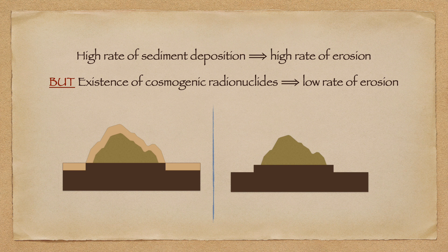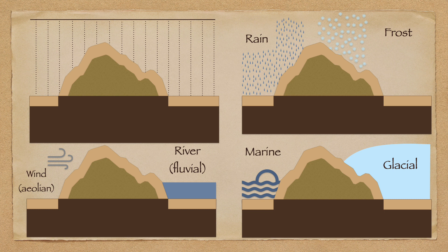So analysis of cosmogenic nuclides provides us with a tool for quantifying the rate of erosion in different geological settings. A wide array of erosional processes have been applied to Earth's surface, some of which are illustrated here. With the aid of cosmogenic analysis, we can now quantify the rate at which these various processes can impact different geological formations.